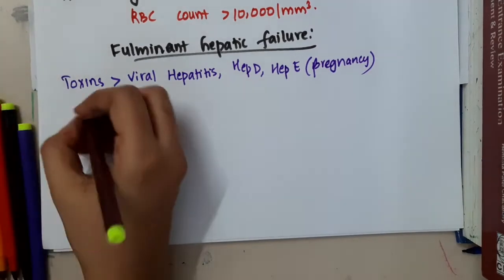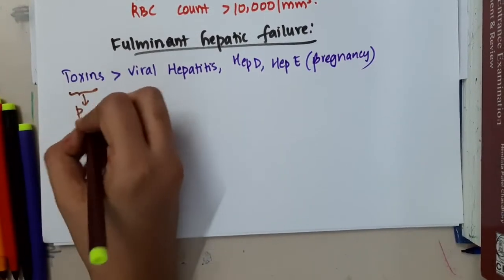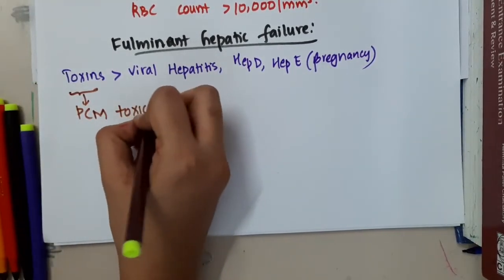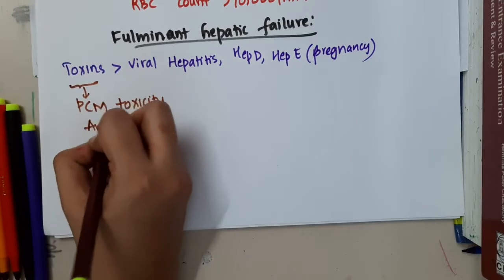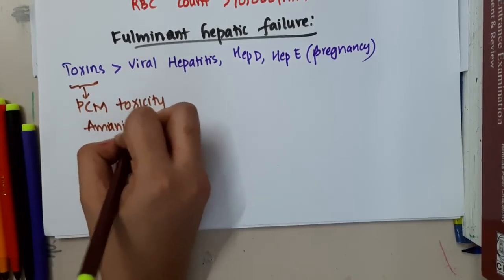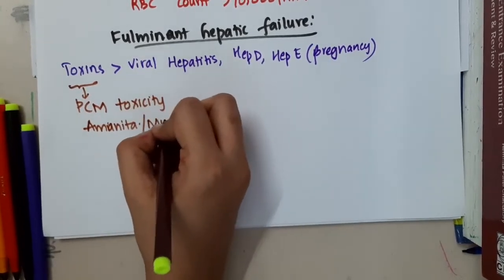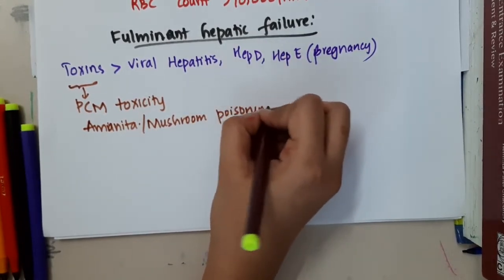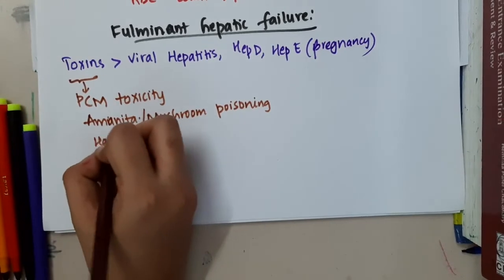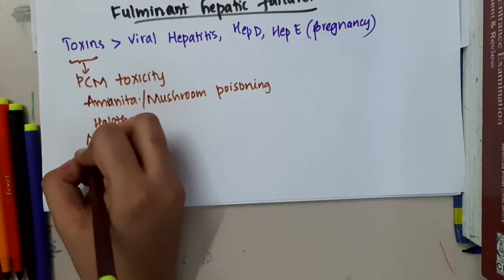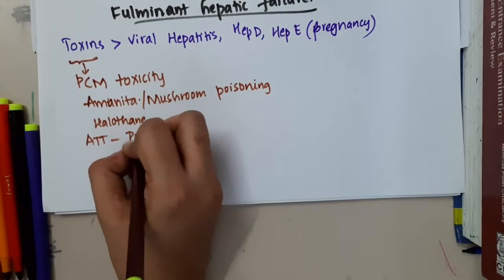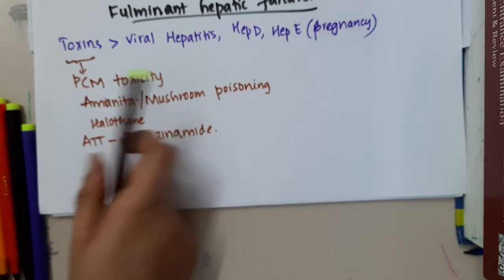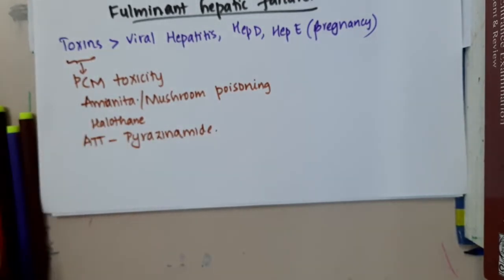In the toxins, you will see there is paracetamol toxicity can cause fulminant hepatic failure. Amanita or mushroom poisoning can result in fulminant hepatic failure. Halothane can result in fulminant hepatic failure. ATT, which is anti-tubercular drug, which is pyrazinamide, will result in fulminant hepatic failure.